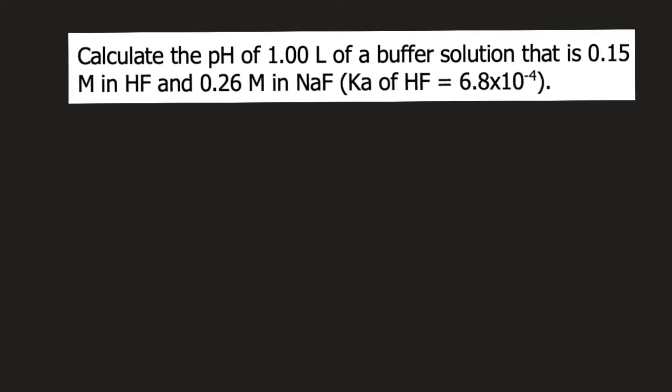Calculate the pH of 1.00 liter of a buffer solution that is 0.15 molar in HF and 0.26 molar in NaF. The Ka of HF is 6.8 times 10 raised to negative 4.